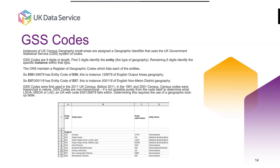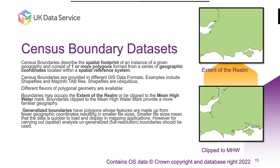Census boundary datasets are a type of geospatial data. They describe the spatial footprint of an instance of a given geography, consisting of one or more polygons, each made up from points. Because they're geospatial data, they are provided in GIS data formats like shapefiles, which you might use in a desktop GIS like ArcGIS or QGIS, or ingest into a data frame in R or Python. Shapefiles are still fairly ubiquitous — they're like the CSV of the geospatial world.